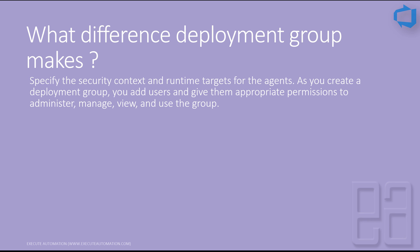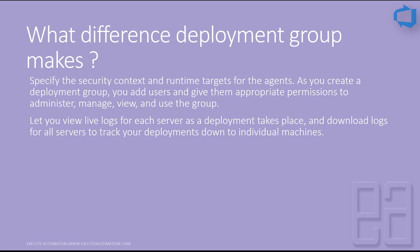A deployment group specifies the security context and runtime target for agents. When you create a deployment group, you add users and assign them appropriate permissions to administer, manage, view, and use the group. It also lets you view logs for each server as deployment takes place and download logs for all servers to track deployments down to individual machines.